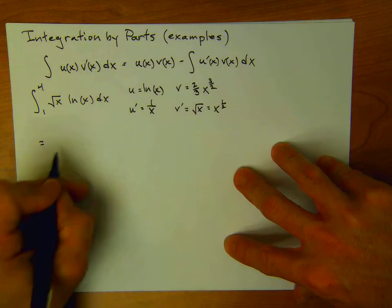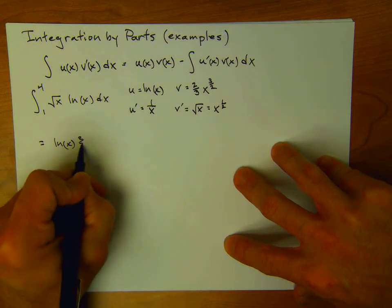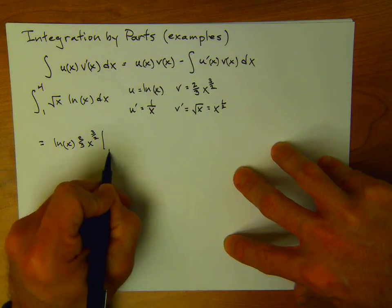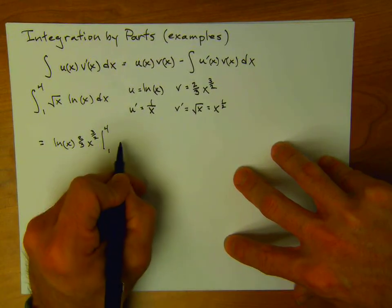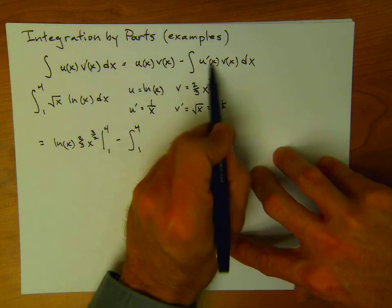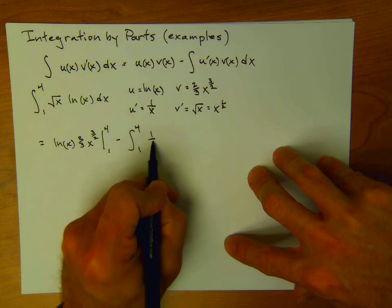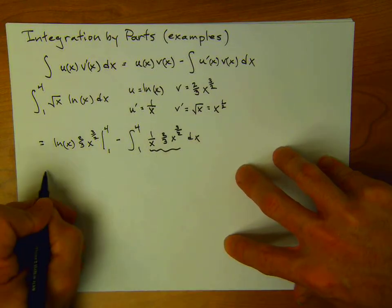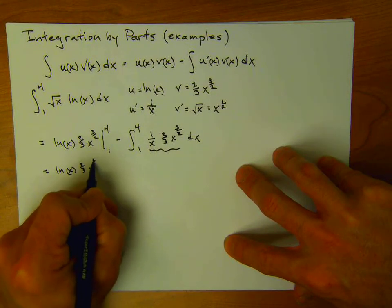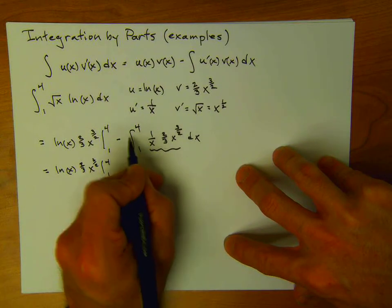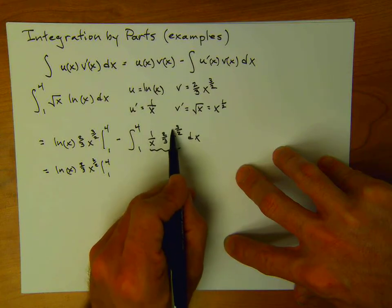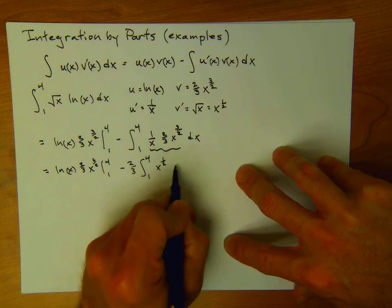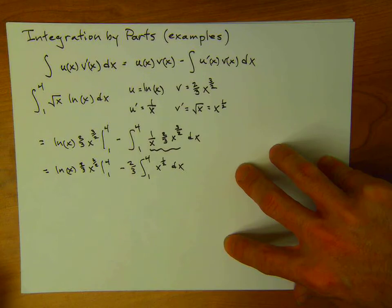So this is going to be u times v: natural log of x times 2/3 x to the 3/2. Since this is a definite integral, there's no more integration to do there — we can evaluate it at the endpoints. Minus the integral from 1 to 4 of u prime times v, so that's 1 over x times 2/3 x to the 3/2 dx. Simplifying: 1 over x times x to the 3/2 gives x to the 1/2, so we get 2/3 times the integral from 1 to 4 of x to the 1/2 dx, which is just the square root of x.